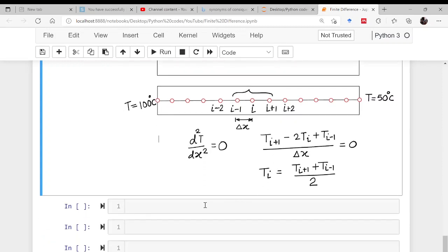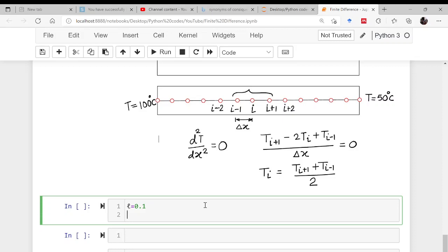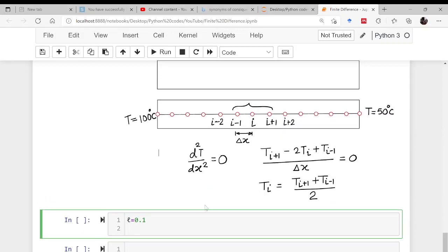Now, to solve this, what we will be doing? First, I will be defining the length of domain. I have already told you how to use symbol as a variable. Let us say L, that is length, is 0.1. Length of this particular domain is 0.1 meters. Now, what else is required? How many nodes are there?